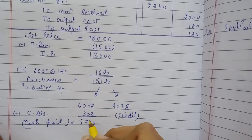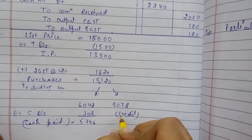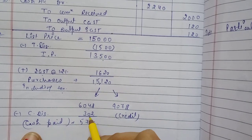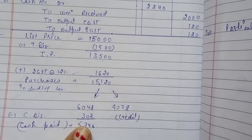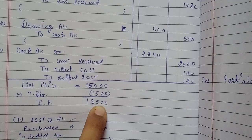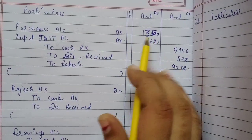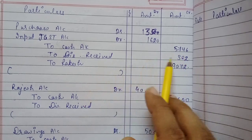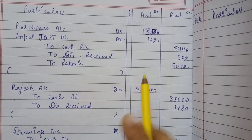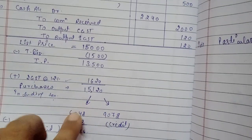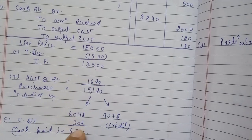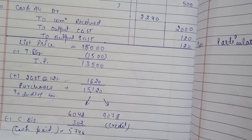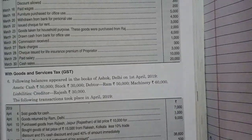Cash discount is recorded in books of account as income (profit), but trade discount is not recorded. IGST is also recorded. The journal entry: purchases account debit 13500, input IGST account debit 1620, cash debit with the amount paid 5746, discount received (cash discount) 302, and the balance payable to Rakesh is 9072. All these values — purchases amount, IGST amount, cash paid, cash discount received, and amount owed to Rakesh — are entered in the general journal.